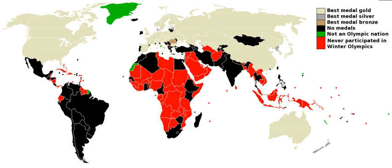The IOC itself does not publish all-time tables, and publishes unofficial tables only per single games. This table was thus compiled by adding up single entries from the IOC database. The results are attributed to the IOC country code as currently displayed by the IOC database.